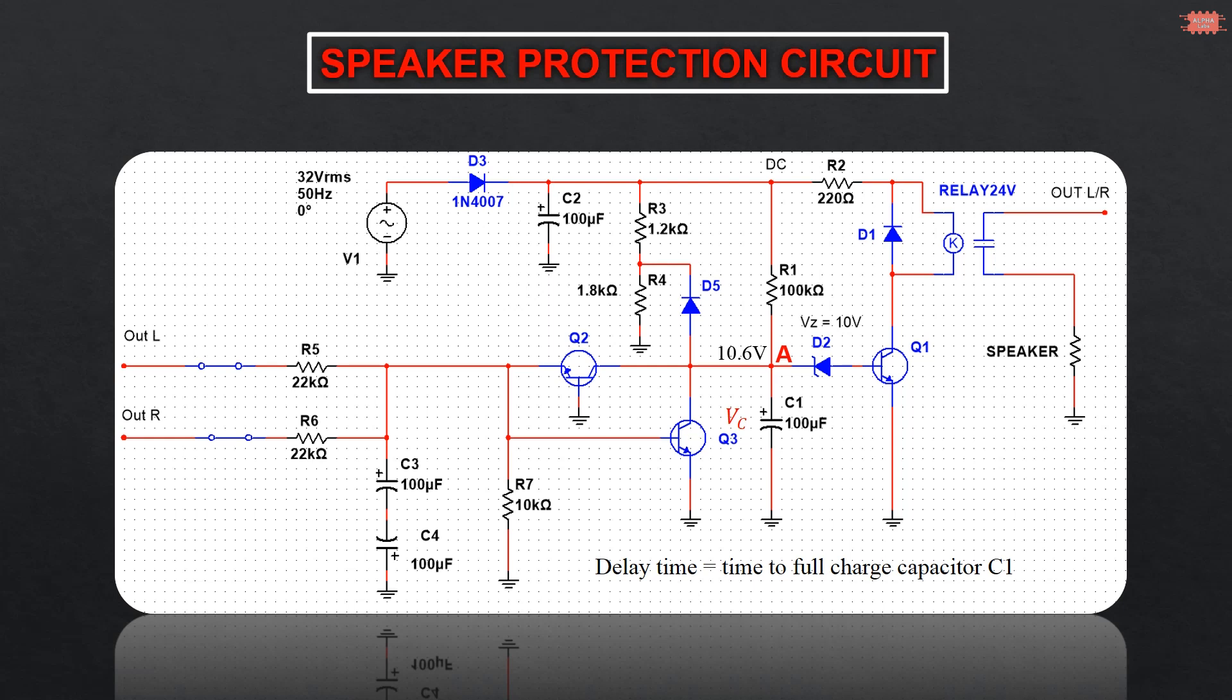So if you want to increase or decrease the delay time, you can increase or decrease the values of resistor R1, C1, or Zener D2.